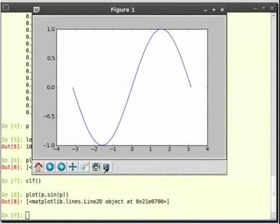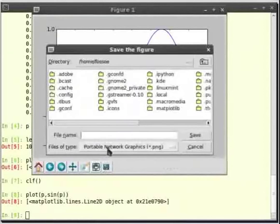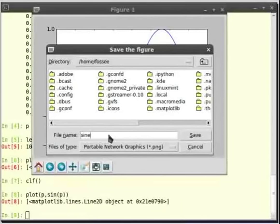To the bottom left of the window there are few buttons. The rightmost among them is for saving the file. Just click on it and type the file name.